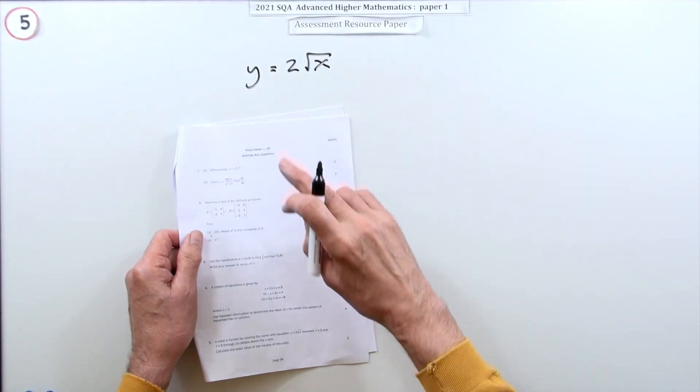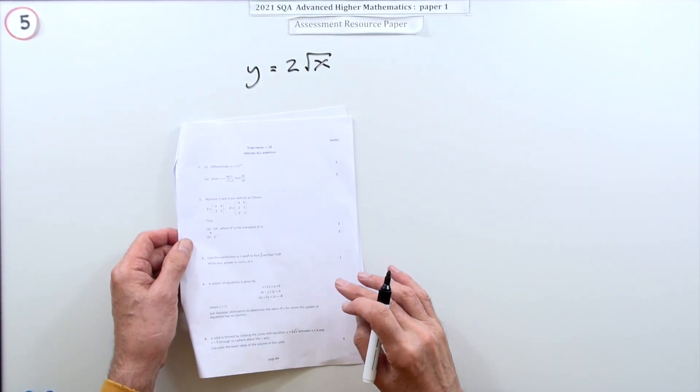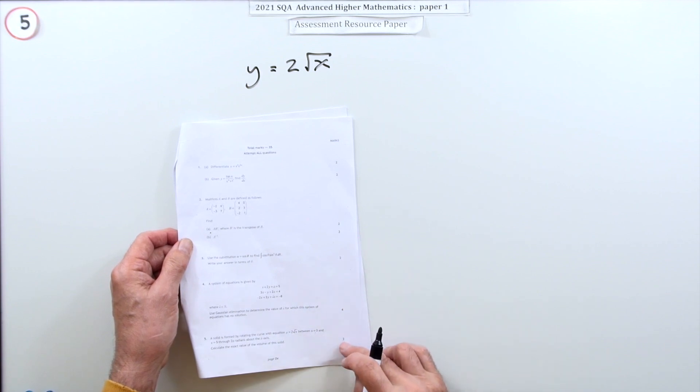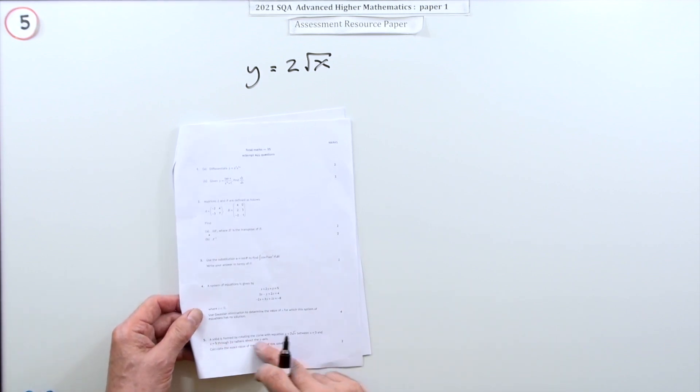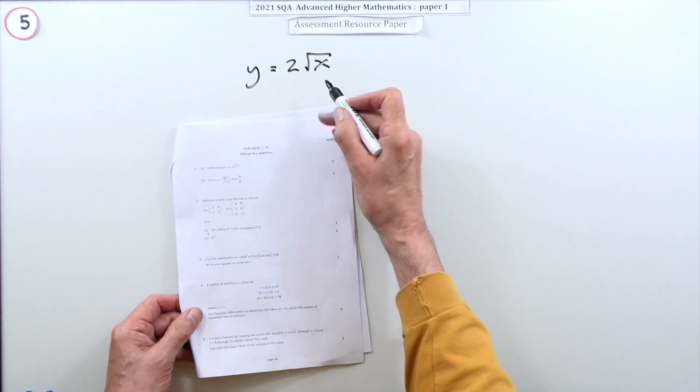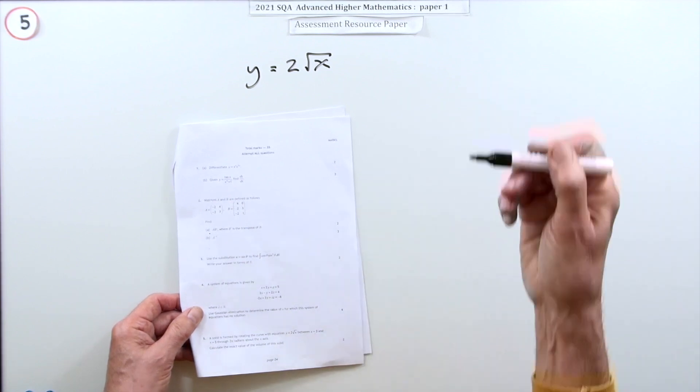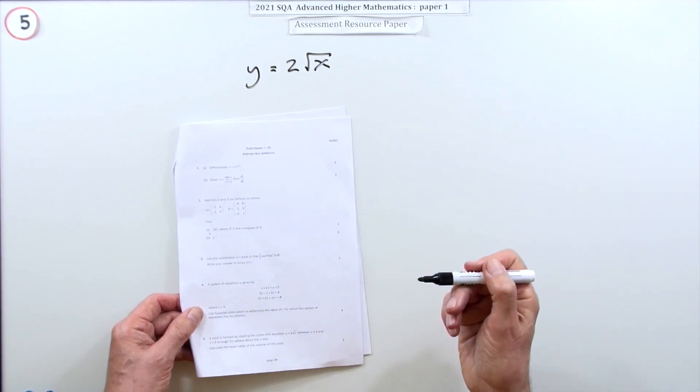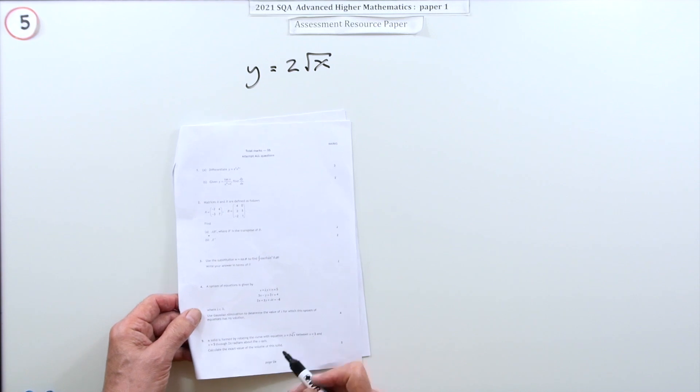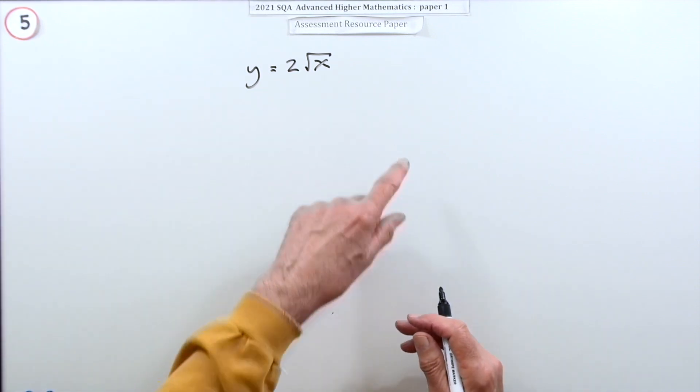Number five then, from paper one of the 2021 Advanced Higher resource paper. Just a little two mark question here. Solid of revolution. A solid is formed by rotating the curve with this equation between x equals three and five, two pi radians, complete turn about the x-axis. What's the exact value of its volume?